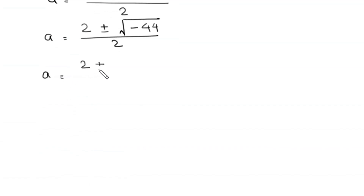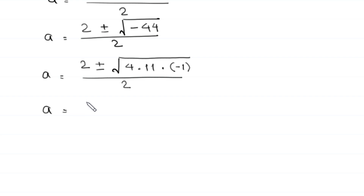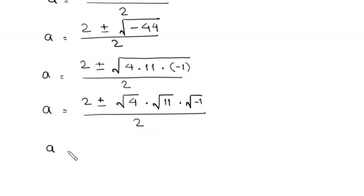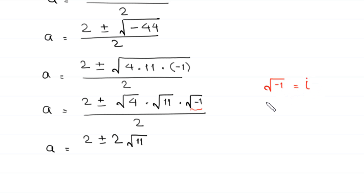Next, a is equal to 2 plus or minus square root of negative 44. We can write the square root of negative 44 as square root of 4 times 11 times negative 1, divided by 2. This becomes square root of 4 times square root of 11 times square root of negative 1, divided by 2. The square root of negative 1 is equal to i, so we replace square root of negative 1 with i.